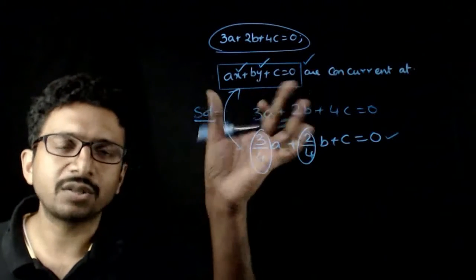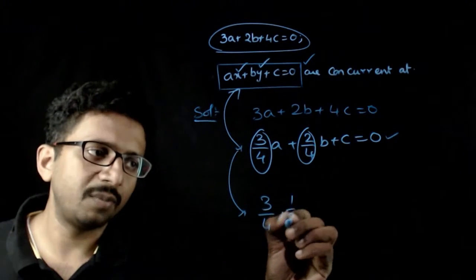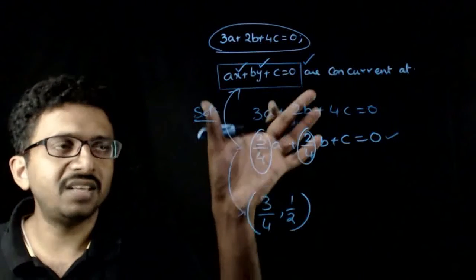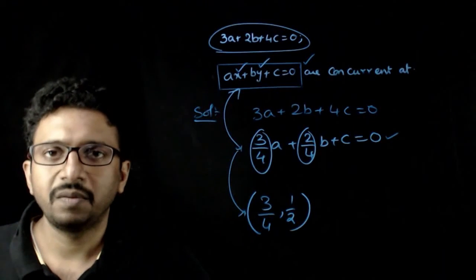That means this line is always passing through the point 3/4 comma 2/4, which is nothing but 1/2. Therefore, these lines are always concurrent at this point. Thank you.